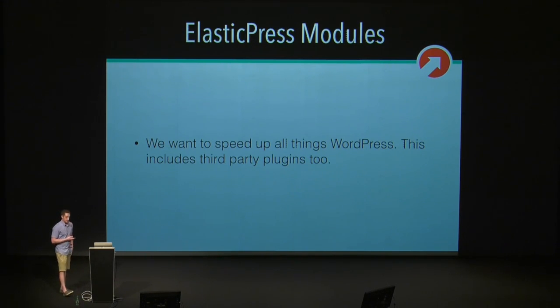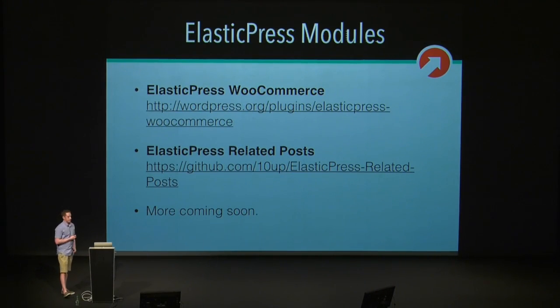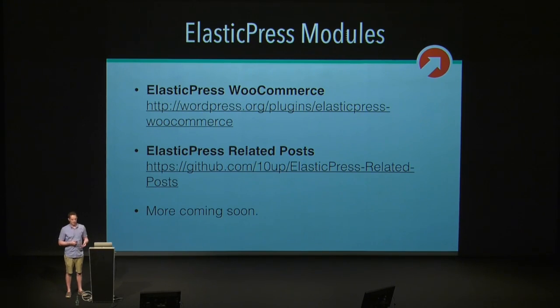Another really cool thing with ElasticPress is we have modules — we want to speed up all things WordPress, including plugins. Two of our modules right now: we have ElasticPress WooCommerce, which is great for e-commerce queries where you want to find products that are blue or red, greater than a certain price, in specific categories — doing those types of queries with WordPress just isn't really possible right now. We can also find related posts in a really cool fashion using Elasticsearch's relevancy calculations. Anyone in the community is encouraged to build their own modules, and more will be coming soon.